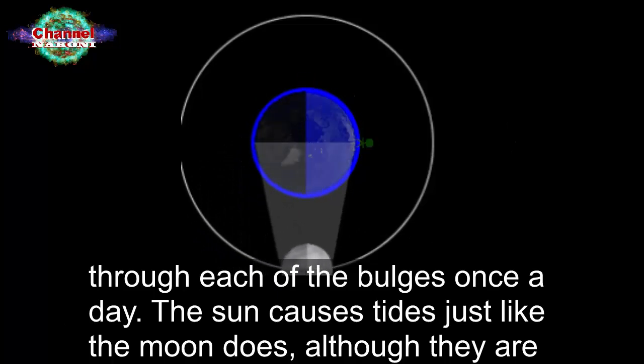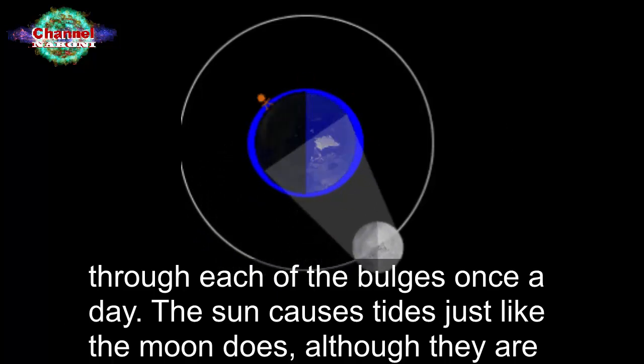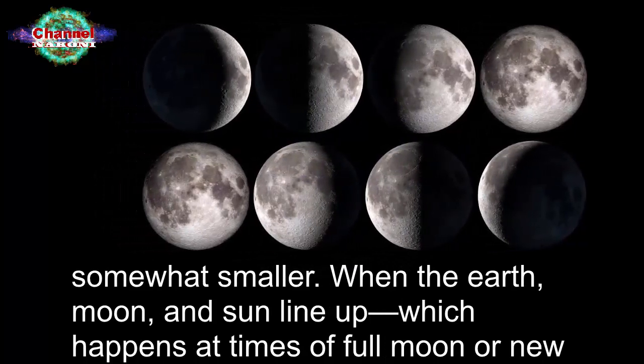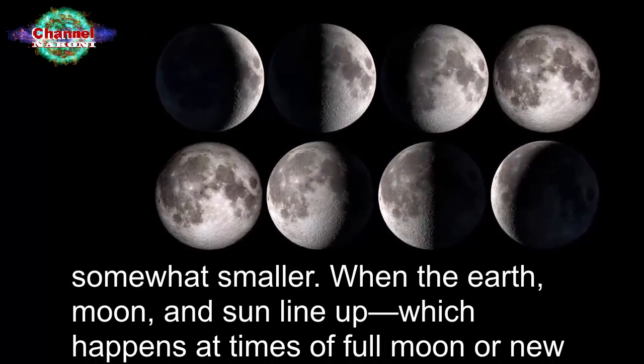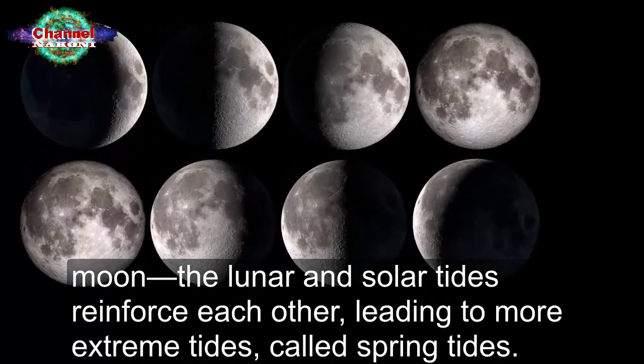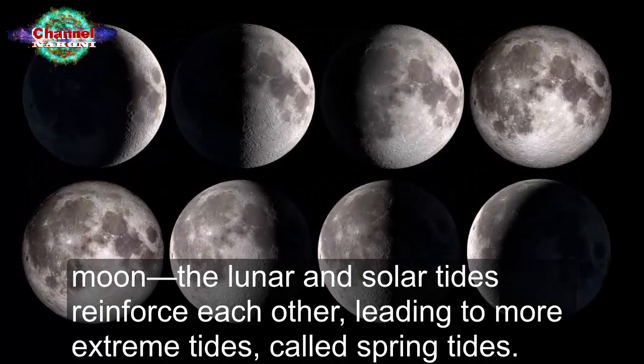The sun causes tides just like the moon does, although they are somewhat smaller. When the earth, moon, and sun line up, which happens at times of full moon or new moon, the lunar and solar tides reinforce each other, leading to more extreme tides called spring tides.